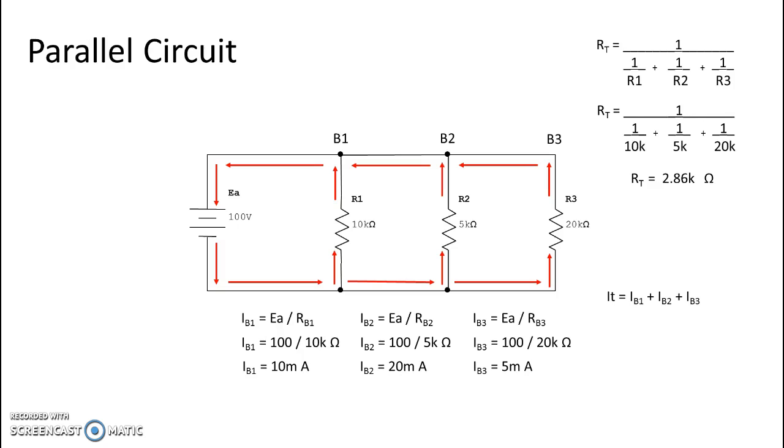So we see that total current is equal to the current of branch one plus the current of branch two plus the current of branch three, which makes sense because we said if we have total current and we divide it up amongst our branches in parallel, that if we add them all back together we would have total current again. So we add all those branches together, 10 milliamps, 20 milliamps, and 5 milliamps, and we get a total current of 35 milliamps.